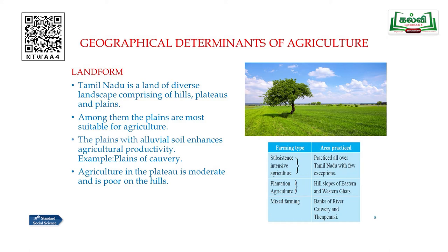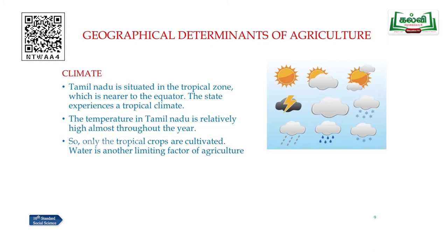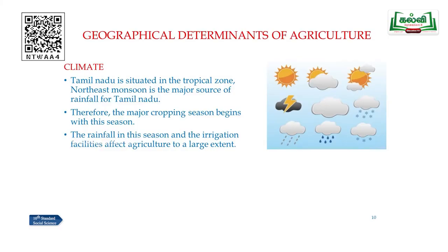Plantation agriculture is mostly used on the hill slopes of the Eastern and Western Ghats. Mixed farming is practiced mostly on the banks of the rivers Kaveri and Tenpennai. Climate is another important geographical determinant of agriculture. Tamil Nadu is situated in the tropical zone, nearer to the equator, experiencing a tropical climate with relatively high temperatures almost throughout the year. So only tropical crops are cultivated. Water is another limiting factor — the Northeast monsoon is a major source of rainfall, and the major cropping seasons begin with this season.